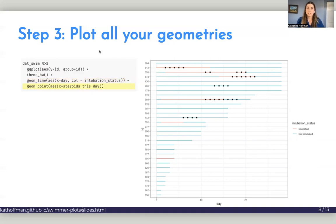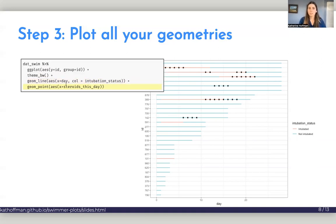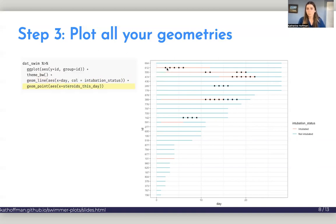And so we can see now we have a line for every patient ordered by length of stay, and their intubation, the line is colored by their intubation status. So that's a great start to the timeline. We can then add the day that each patient receives steroids, so steroids underscore this day, we can map that to a geom_point aesthetic. We'll do the same thing for the day that they met severe hypoxia criteria, and the same thing for the day that they died.